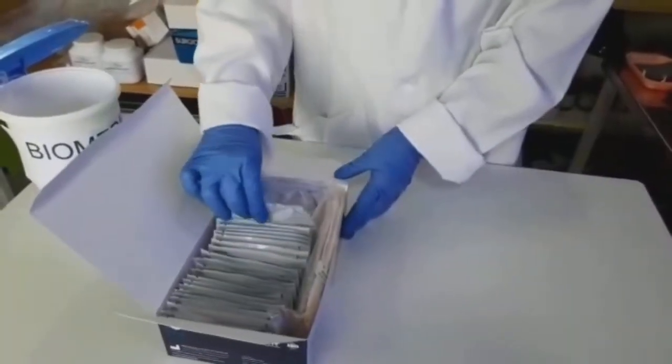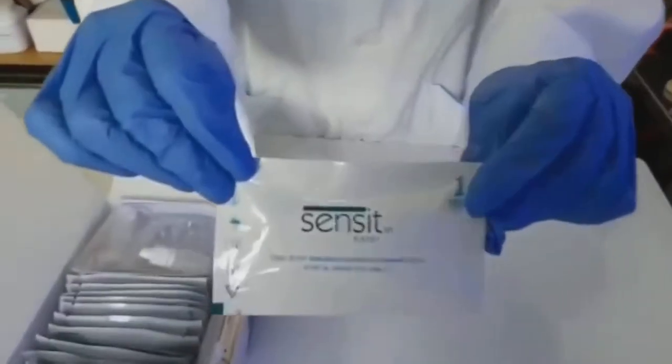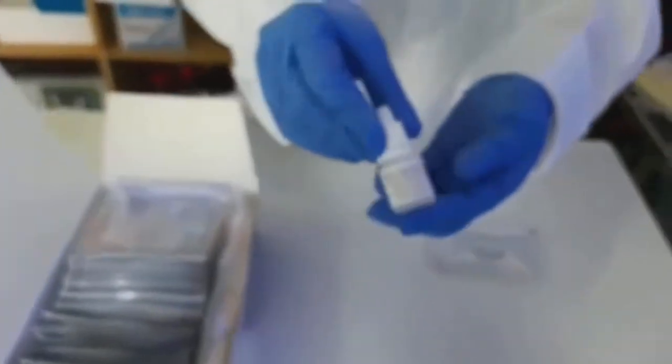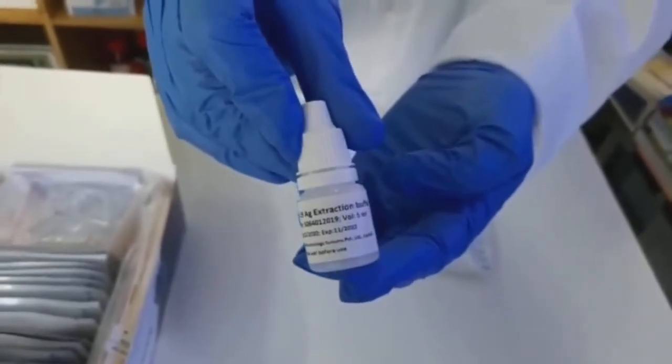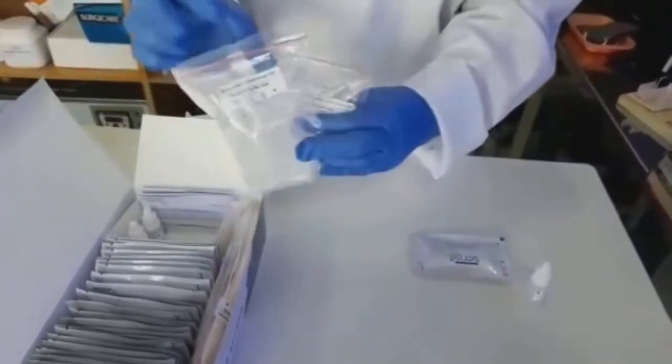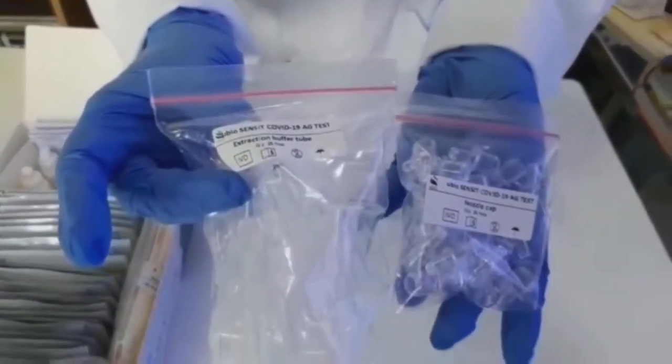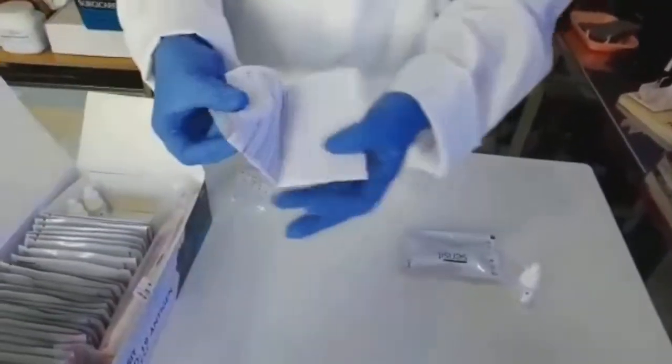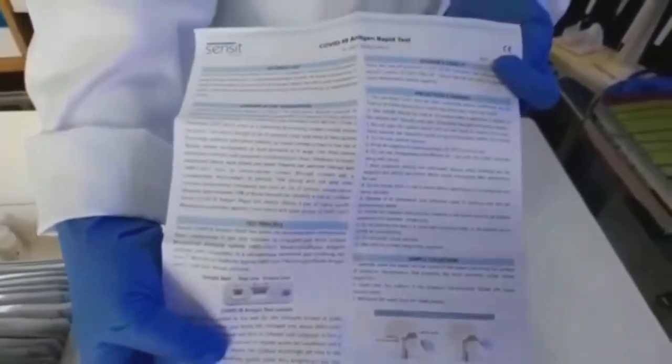The test kit contains COVID-19 antigen test cards in well-sealed foil pouches, extraction buffer and dropper bottles, extraction tube and its nozzles, an instruction leaflet that details how to conduct the procedure, and sterile nasal swabs.